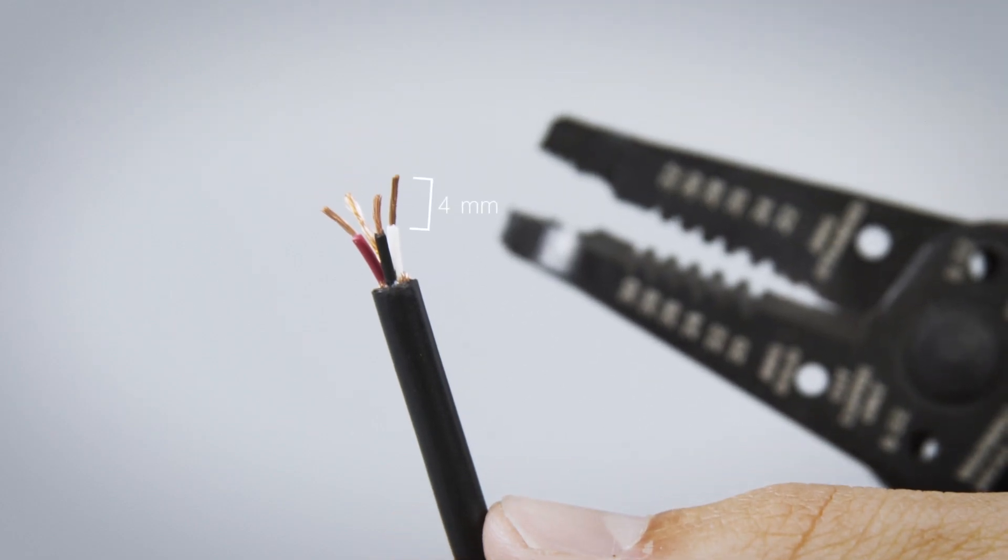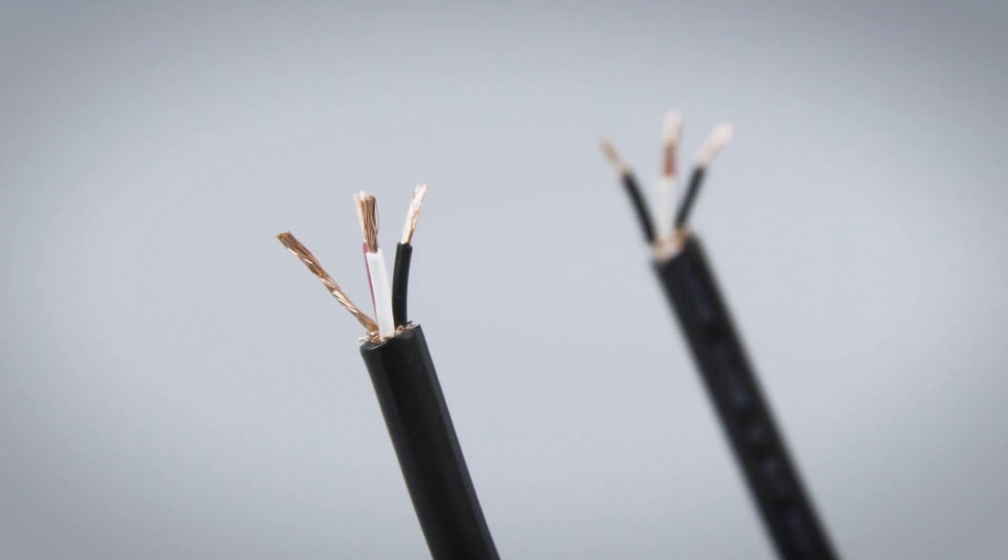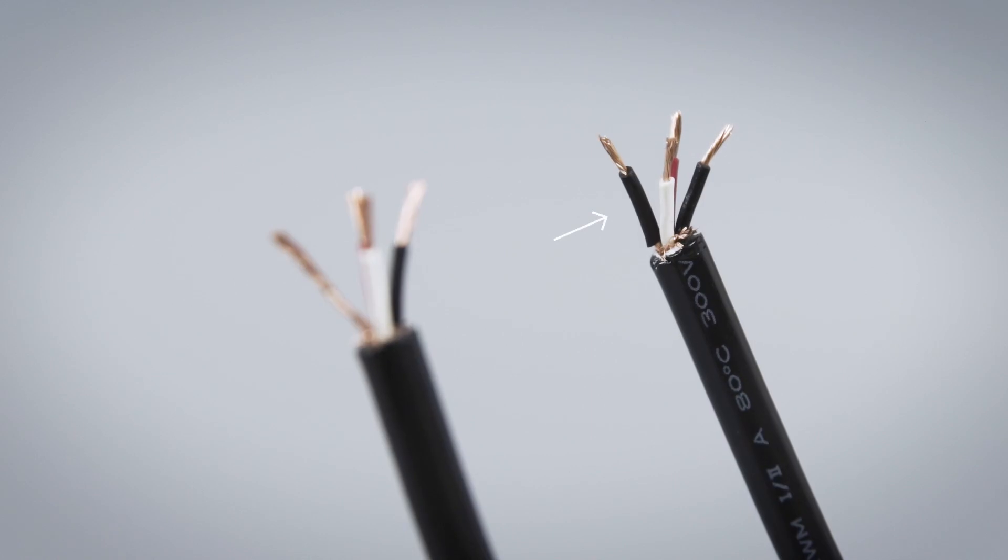Strip off 4 millimeters from all insulators. If you are using a drain wire, apply heat shrink to the drain, leaving 4 millimeters of the conductor exposed.